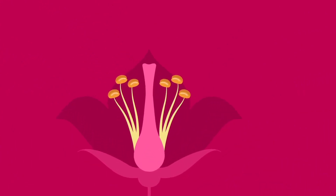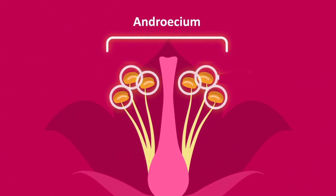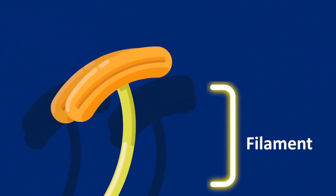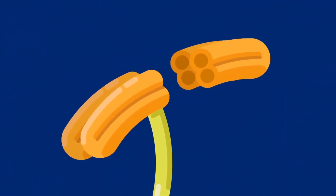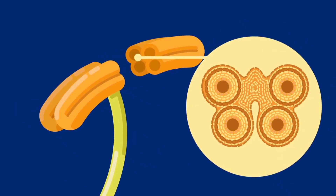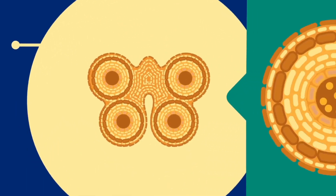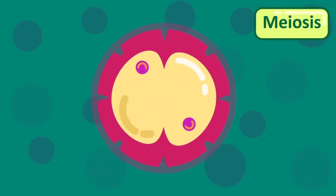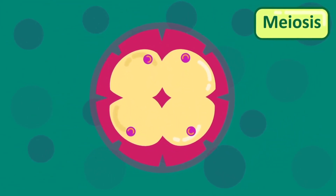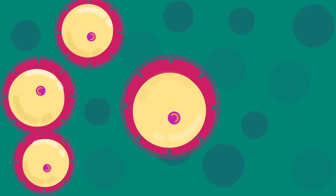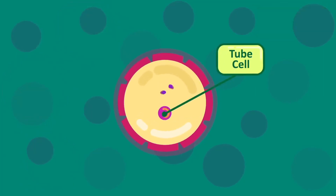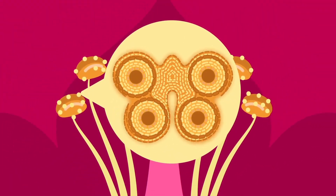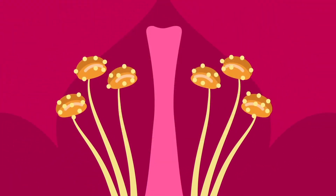Stamens: the androecium is the collective name for the stamens of a flower that produces pollen grains. It consists of a filament bearing an anther. The anther is usually made up of two lobes, each containing two pollen sacs. The pollen sacs contain pollen grains, which are produced by meiosis and so contain the haploid number of chromosomes. Each pollen grain gives rise to two haploid male gametes, which are the reproductive nuclei of the flower. When the anther matures, its lobes split, setting free the pollen grains.